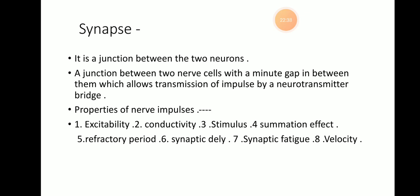The refractory period, or synaptic delay, means the impulse requires about 0.3 to 0.5 milliseconds to cross a synapse. This time is required for release of the neurotransmitter from the axon terminal and excitation in the dendron of the next neuron. Then there is synaptic fatigue, and velocity — the velocity of nerve impulse conduction is higher in homeotherms, meaning warm-blooded animals, than in poikilotherms, meaning cold-blooded animals.